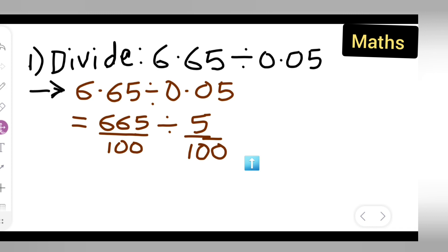Now you have 665 upon 100. Now you have to divide this term with this. 665 divided by 5, upon 665 upon 100 divided by 5 upon 100.